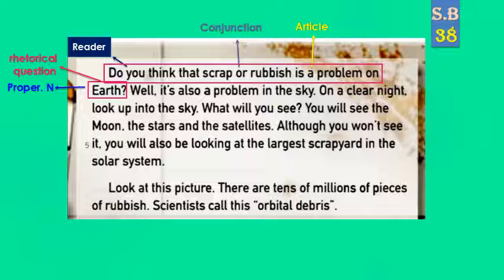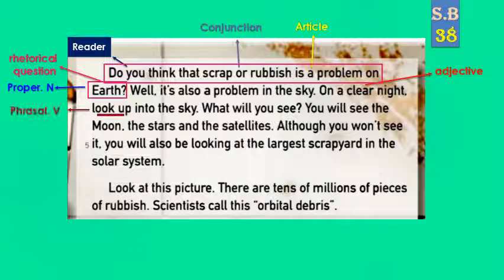It is also a problem in the sky — وهي أيضًا مشكلة في السماء. On a clear night — في ليلة صافية — look up into the sky. 'Clear' is an adjective meaning صافية. 'Look up' is a phrasal verb — فعل مركب — where 'look' is the verb and 'up' is a preposition, حرف جر.